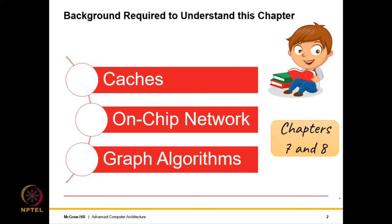Particularly required are cycles in graphs and the topological sort algorithm. Topological sort and the existence of cycles in a graph are the two basic concepts students are expected to know. This chapter heavily builds on chapters 7 and 8, and pointers will be supplied at the right points within the chapter for anything that is required.